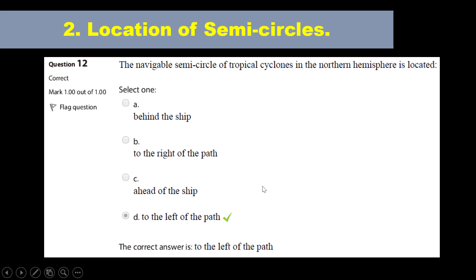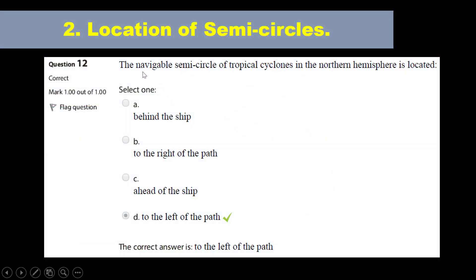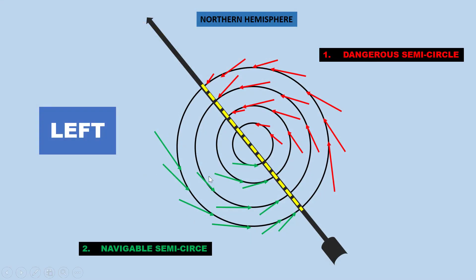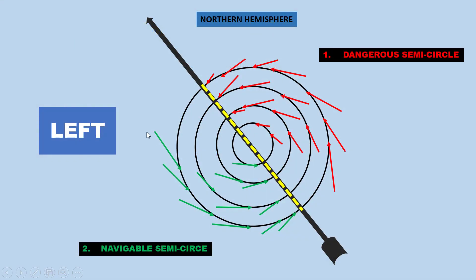We are going to use the diagram to explain why these options are not correct. This is how the tropical cyclone looks like in the northern hemisphere. You have the dangerous semicircle and you have the navigable semicircle, and this is the path of the tropical cyclone. The navigable semicircle in the northern hemisphere is located at the left side of the path.